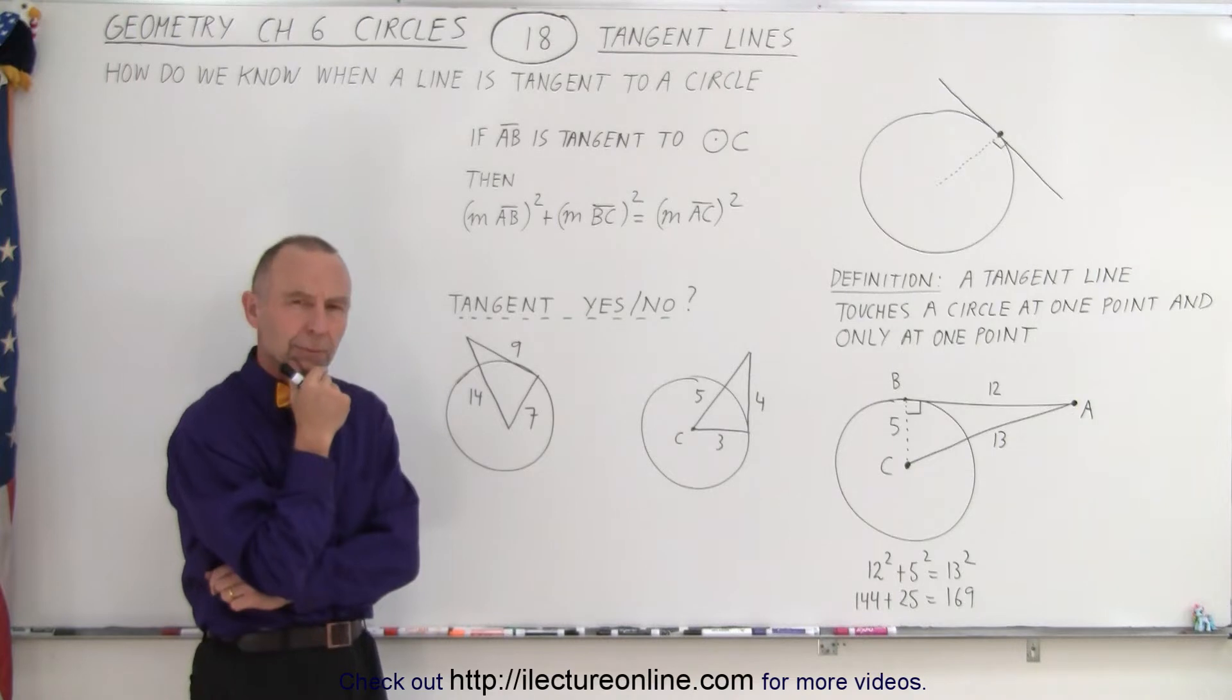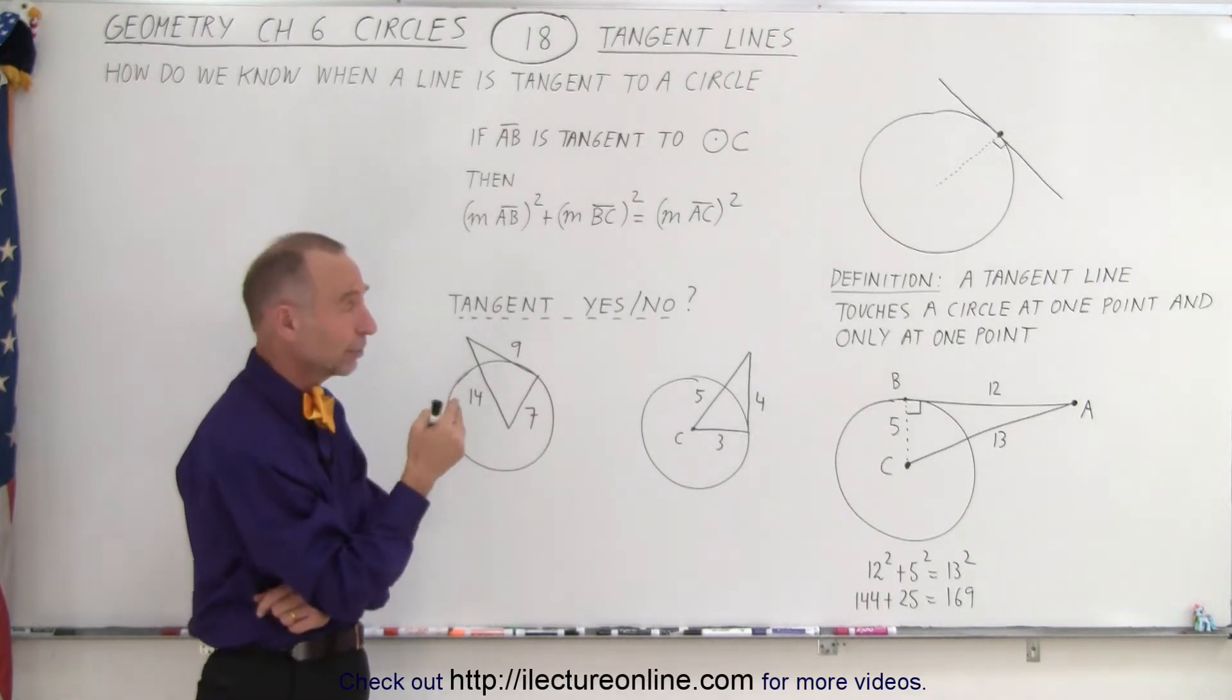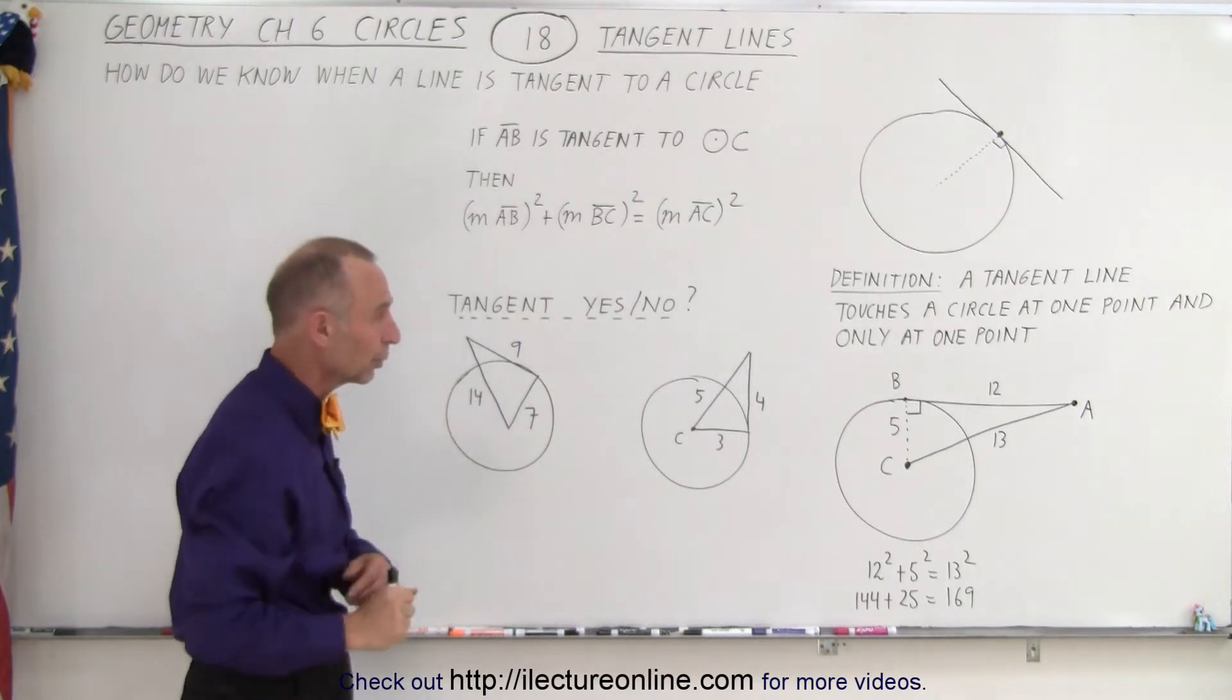What if the line touches through two points? Well, then it's called a secant line, not a tangent line. So, tangent line, one point only.